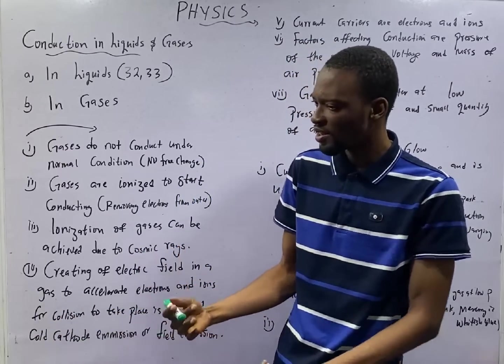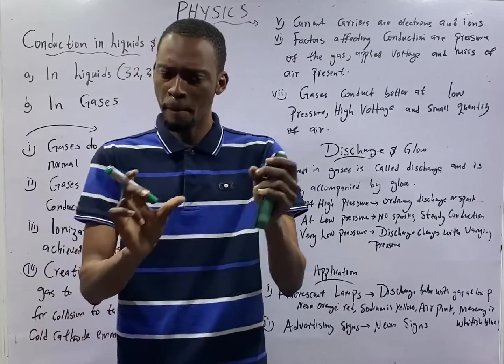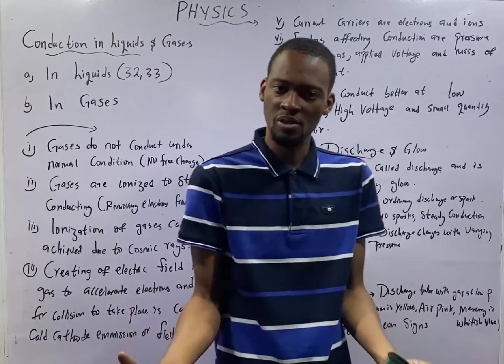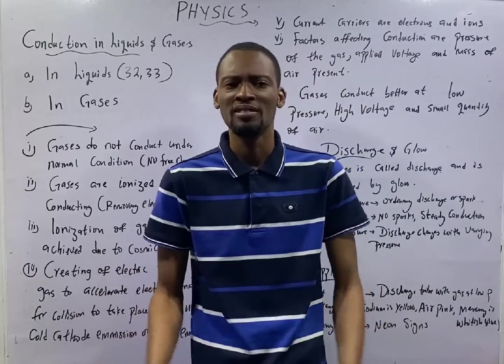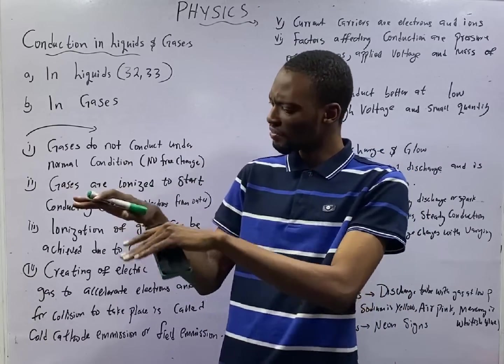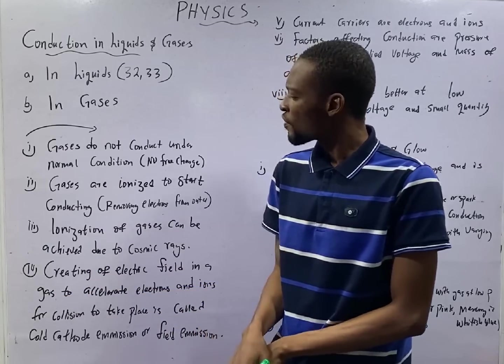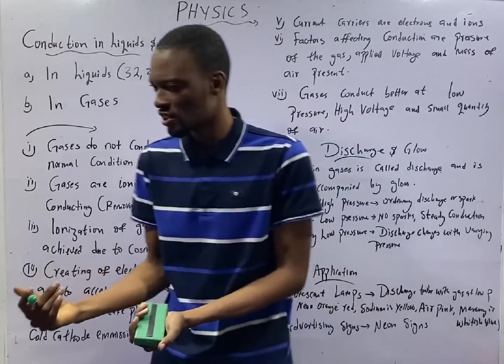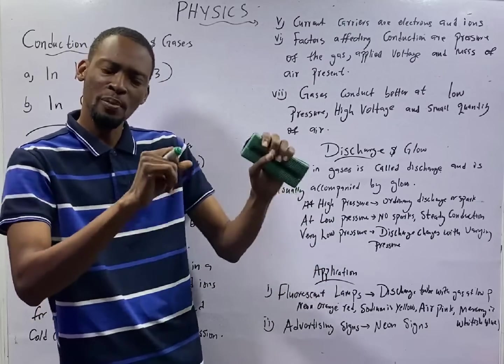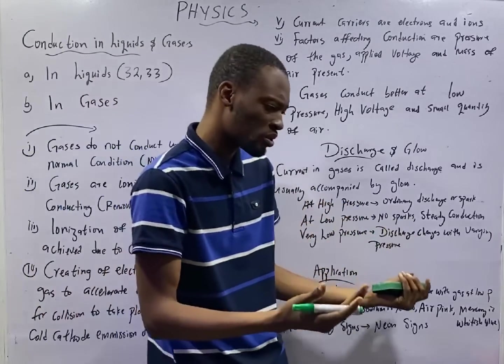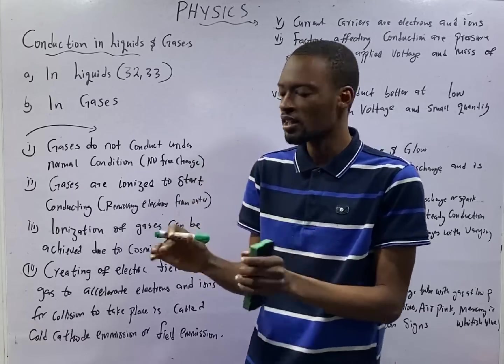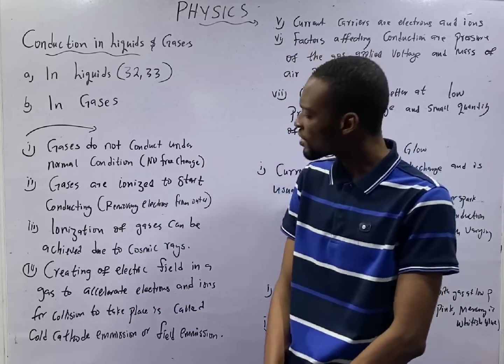Remember, conduction in solids has to do with metals and non-metals. In metals, conduction is done by free electrons. You have copper, silver, aluminum as good conductors of electricity. They allow current to pass through them and they have lower resistance. Semiconductors can be intrinsic or extrinsic. Pure semiconductors do not conduct, but when you add impurities to them by a process called doping, they begin to conduct. Semiconductors conduct by means of holes and electrons. Conductors conduct by means of free electrons.